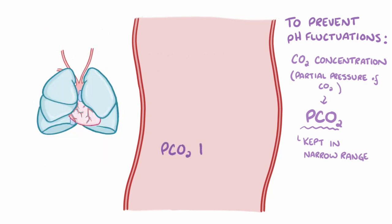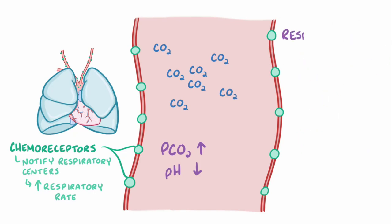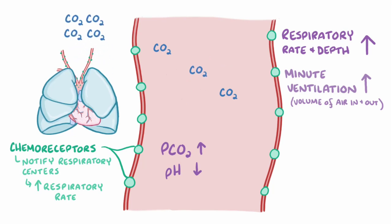If pCO2 starts to rise and pH starts to fall, chemoreceptors found in the walls of the carotid arteries and in the wall of the aortic arch start to fire more, notifying the respiratory centers in the brainstem to increase the respiratory rate and the depth of breathing. As the respiratory rate and depth of each breath increases, the minute ventilation increases — the volume of air that moves in and out of the lungs in a minute — helping move more carbon dioxide out of the body, which reduces pCO2 and raises the pH.